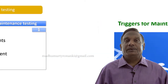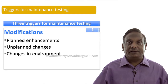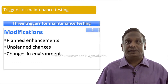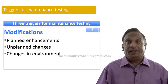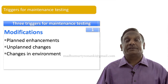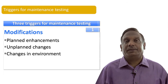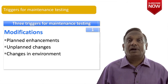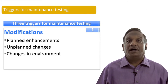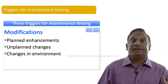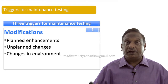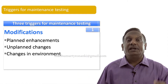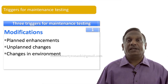Let us talk about each one of them. Modification: whenever the software that is in the maintenance phase gets modified, that might trigger us to do maintenance testing. As we said, as part of maintenance testing we perform retesting and regression testing. Modifications can happen to the software itself or to the software's environment. The software might undergo a change because some enhancements are done, or sometimes bug fixes are done as unplanned changes, or changes to the environment — a new database version or a new operating system version has arrived. All these are potential modifications that can occur while the software is in its maintenance cycle and will lead us to do maintenance testing. So modifications is one trigger.